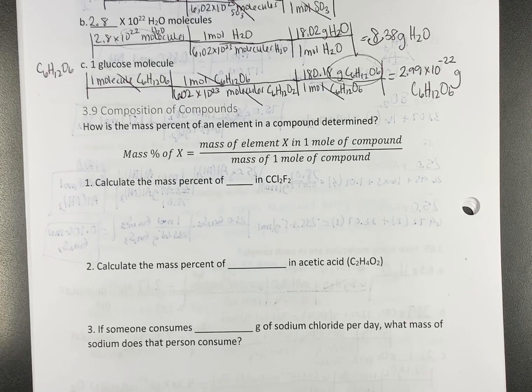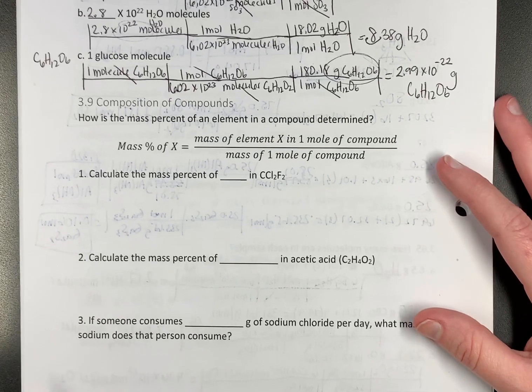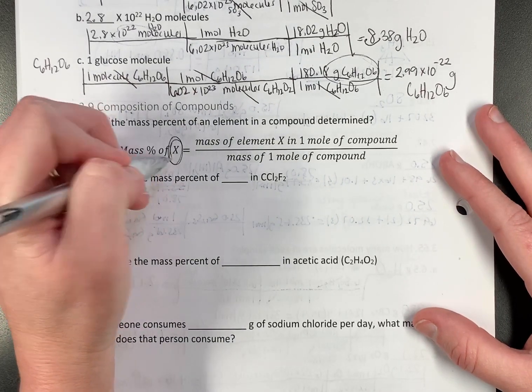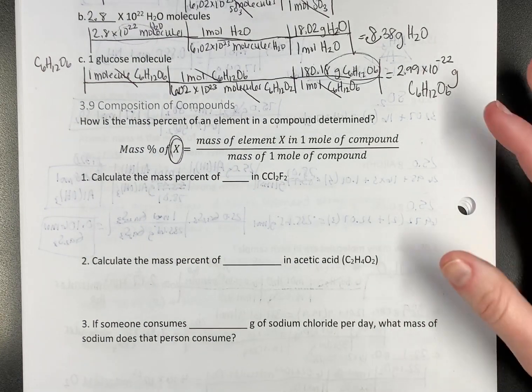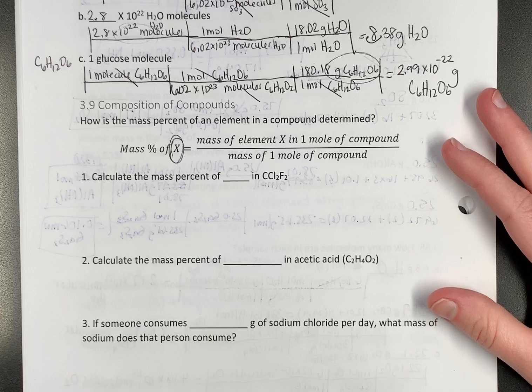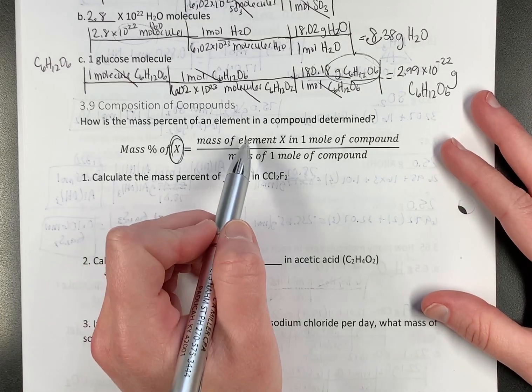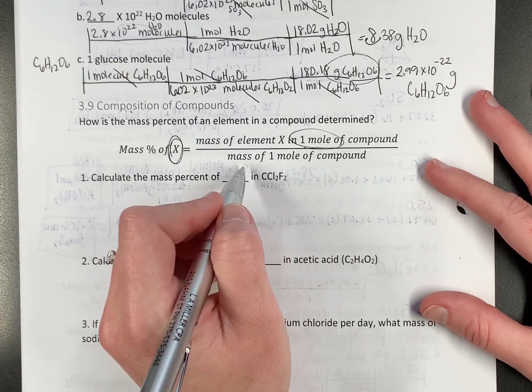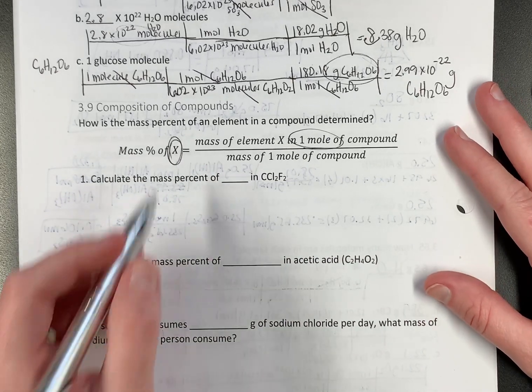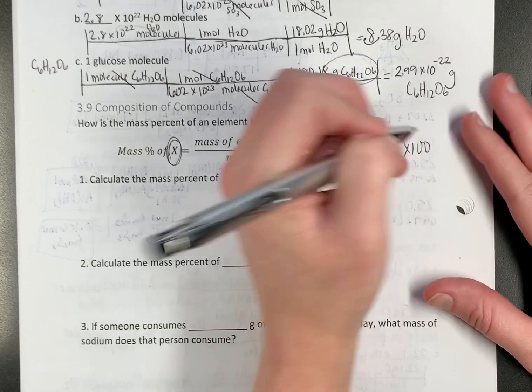We're using a formula called mass percent. So mass percent of whatever you're looking for, it's usually going to be an element, is the mass of the element in one mole of the compound over the molar mass of the compound. And then if you're doing a percent, you would do times 100.